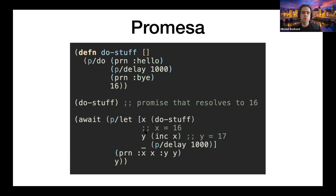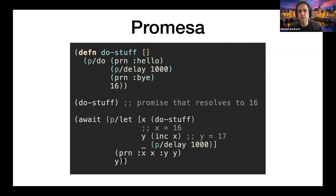You don't have to use promises on the right-hand side of `p/let` — you can also use any regular value. So here we increment `x` and `y` is 17. Then we wait another second, print something, and return `y`. If you evaluate this in the REPL it returns a promise, but there is one special function in NBB designed for the REPL called `await` which lets you block on promise results. Let me show that in the REPL.